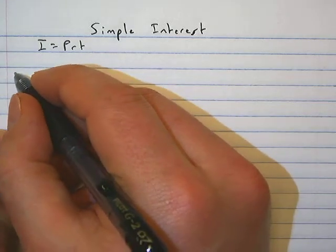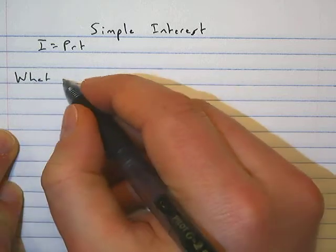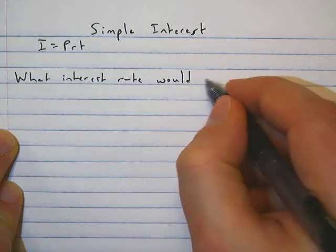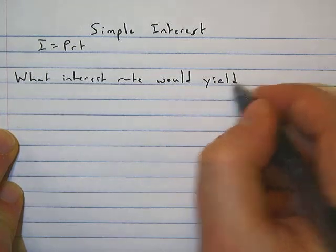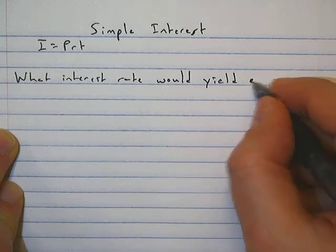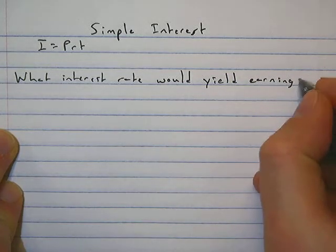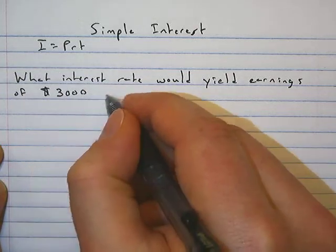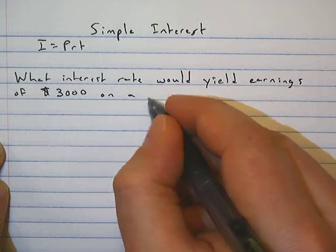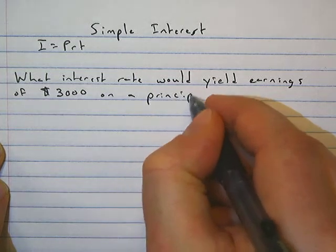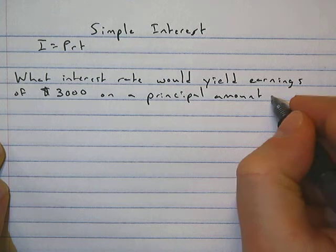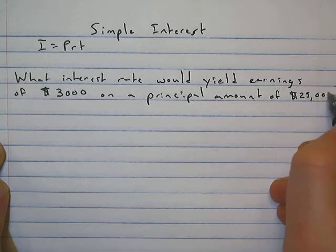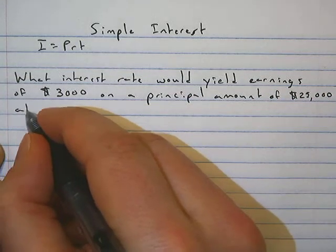So first problem: what interest rate would yield earnings—yield means gain or create earnings—of $3,000 on a principal amount of $25,000 at a term of 8 years?